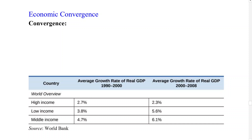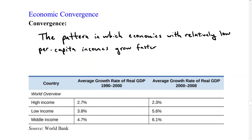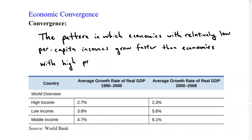So that's this idea of convergence. Our definition is: the pattern in which economies with relatively low per capita incomes grow faster than economies with high per capita incomes.